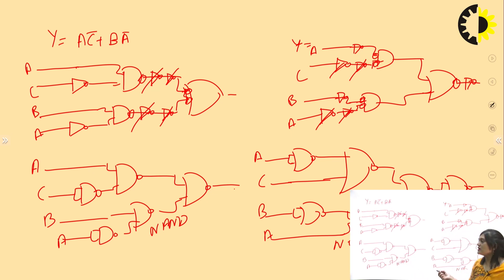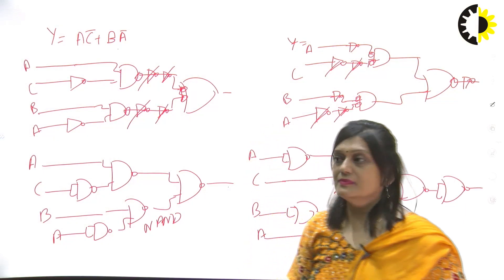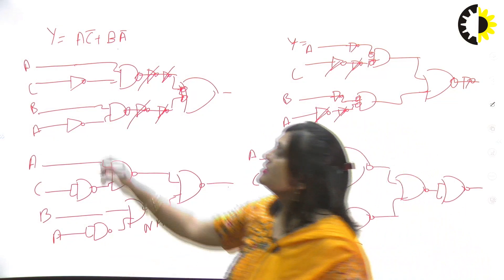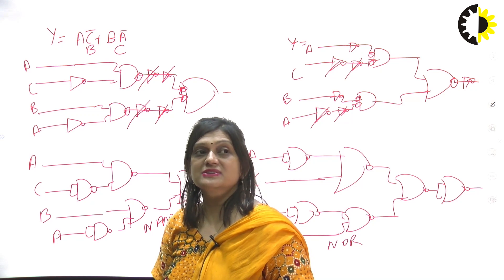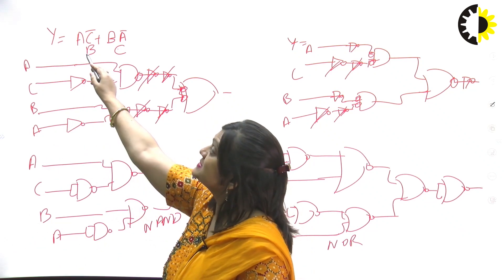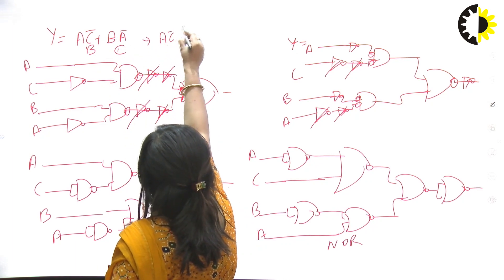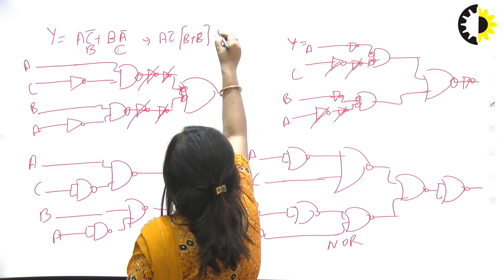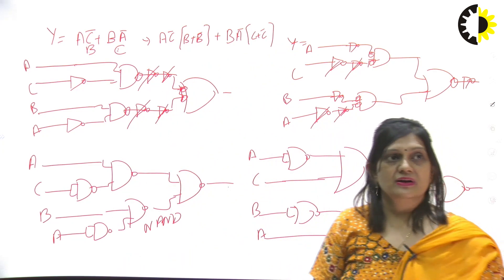We can also convert any expression into canonical form. We need to find the missing variables. If three variables are A, B, C and one term is missing B, and another term is missing C, we multiply the first term by (B + B̄) and the second by (C + C̄). We will see this in the next lecture. Thank you.